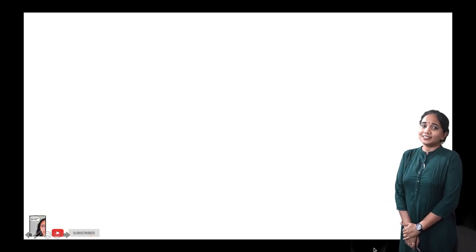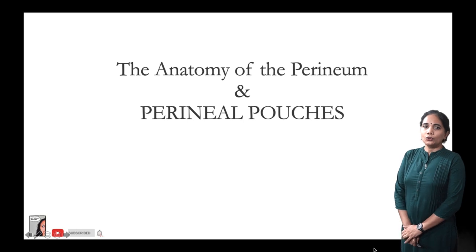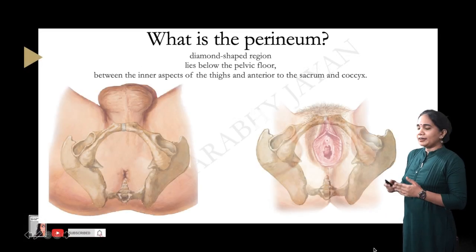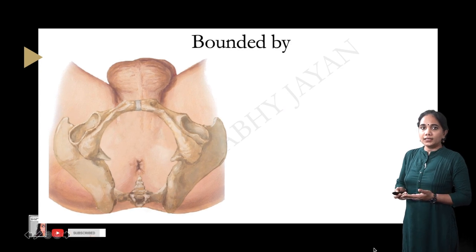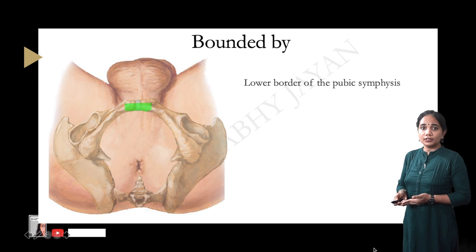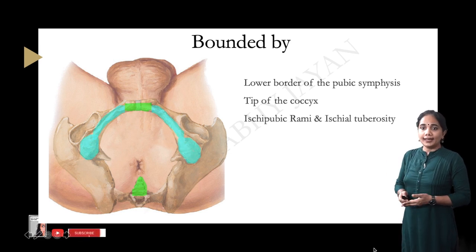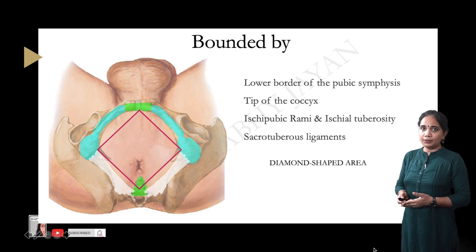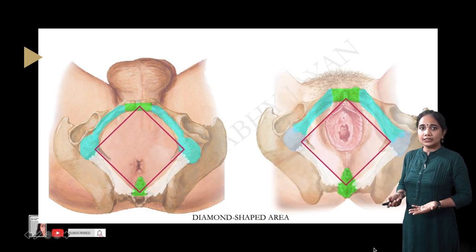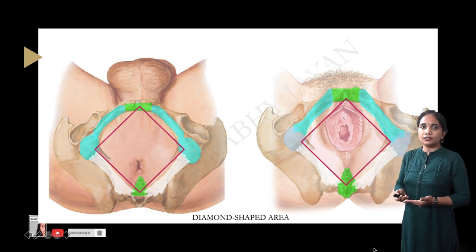Welcome to Let's Talk Anatomy. Today let's talk about the anatomy of the perineum and the perineal pouches. The perineum is this diamond-shaped area in between the thighs and below the trunk. It lies anatomically below the pelvic floor. The boundaries are: the lower border of the symphysis pubis on top, the tip of the coccyx below, the ischiopubic rami and the ischial tuberosities on either side, and the sacrotuberous ligaments posteriorly. This gives it the diamond-shaped appearance in both males and females, with the only difference being the presence of the external genitalia.